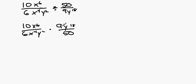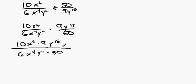Now this becomes just one big fraction. So I have 10x to the 6th times 9 times y to the 18th over 6x to the 4th y squared times 50. This, in turn, becomes 90x to the 6th y to the 18th over 300x to the 4th y squared.